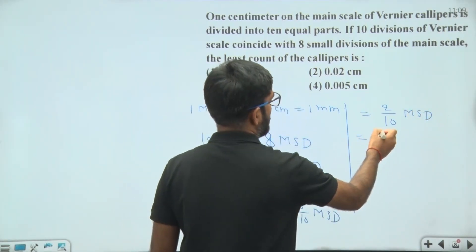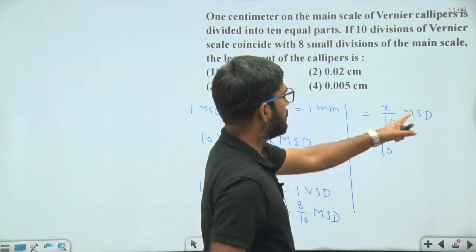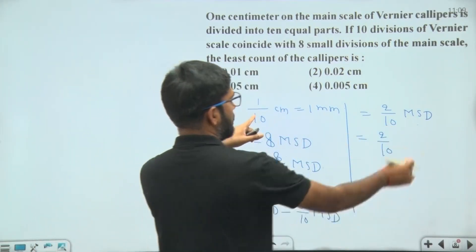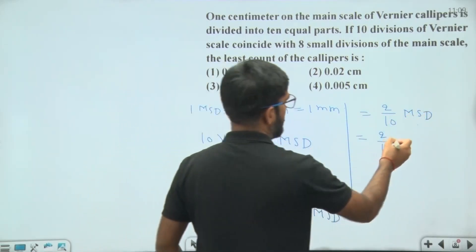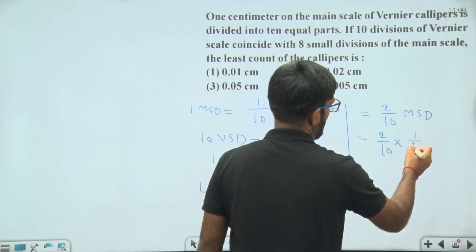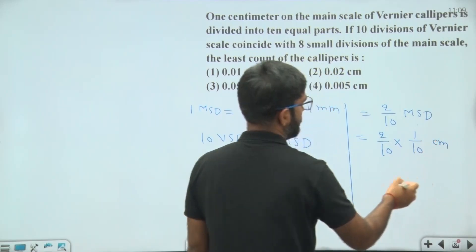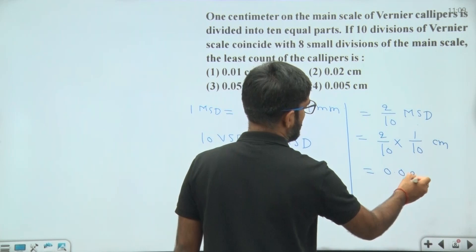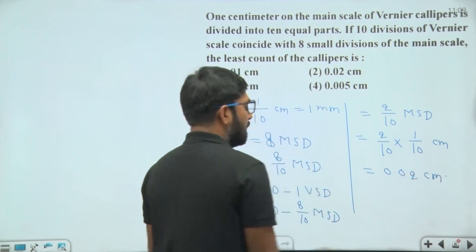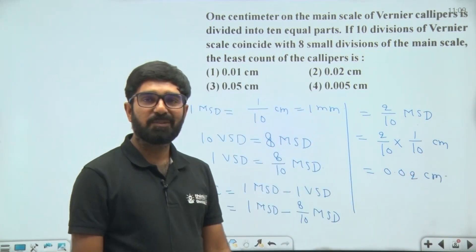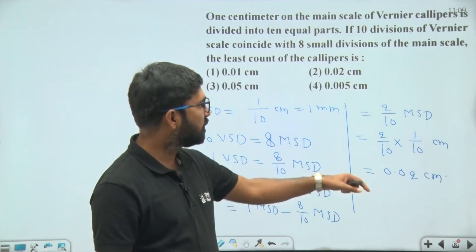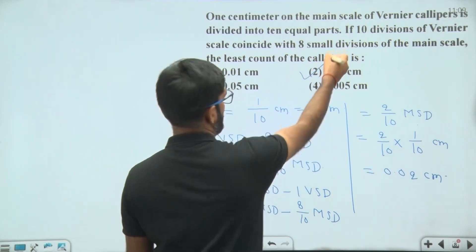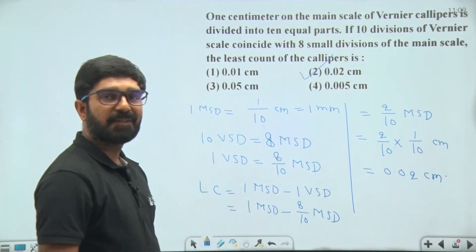This will be 2 by 100, which is equal to 0.02 cm. Hence the least count of this vernier calipers will be 0.02 cm. This value is given in option 2, hence the final answer is option 2. Thank you.